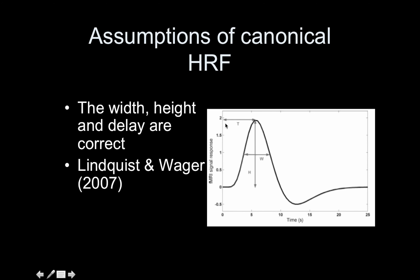The assumptions of the canonical HRF are that it has a specific width, a specific time to peak, and other parameters that explain the post-stimulus undershoot. The only free parameter when we use HRF convolution is the height. The beta in our regression model is what we multiply this height by to match the height of the BOLD activation. If the time to peak is wrong, the height will be wrong, because the peak won't line up with the peak of the BOLD HRF.